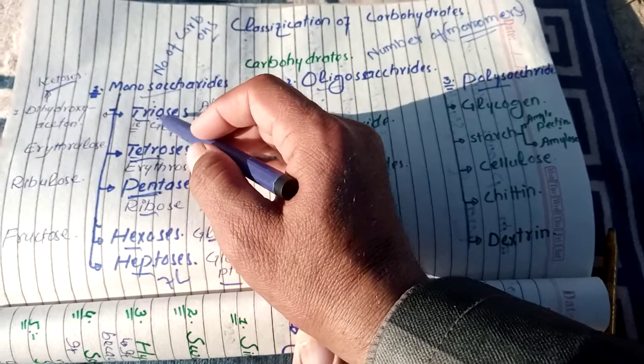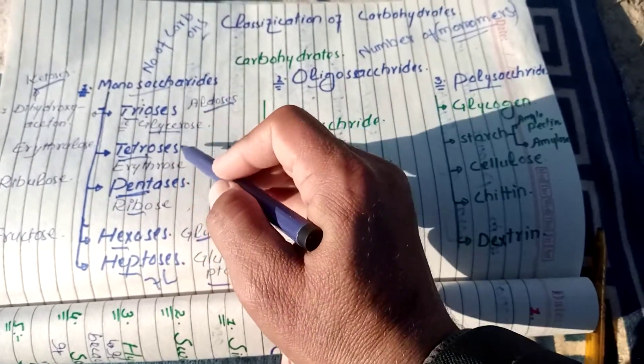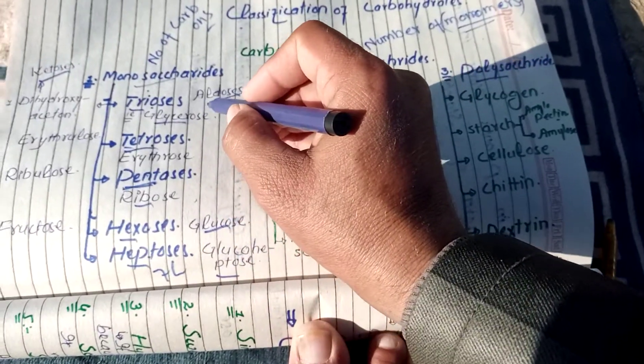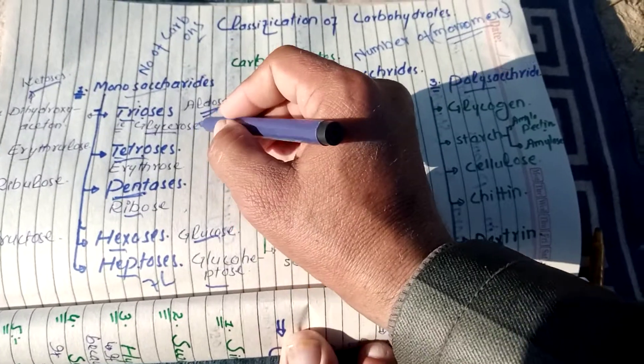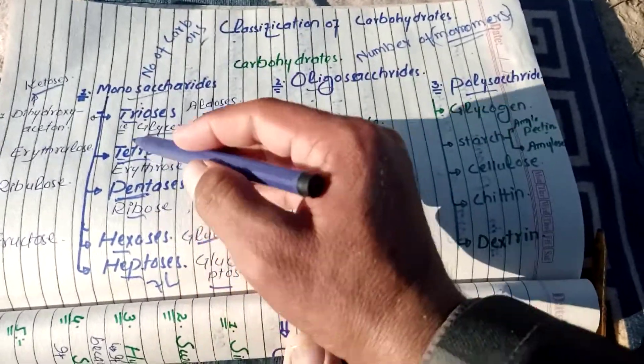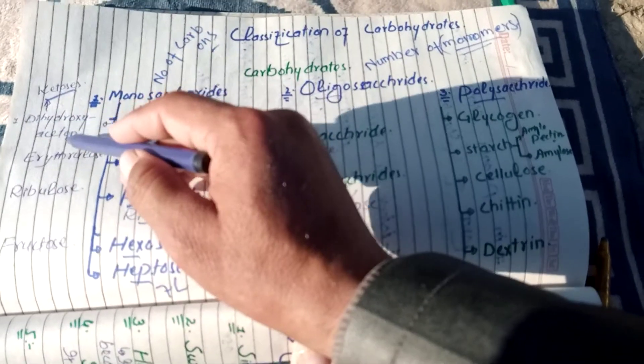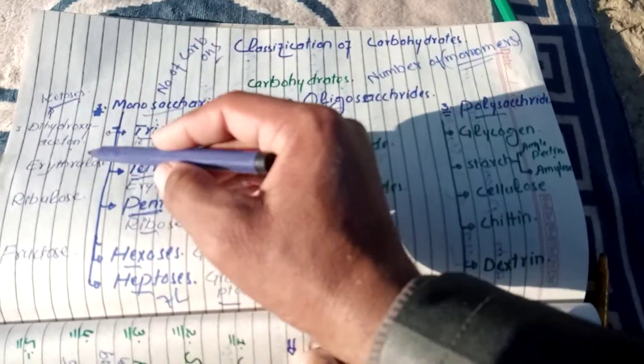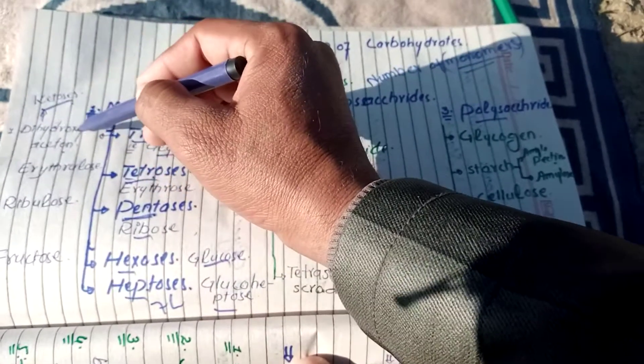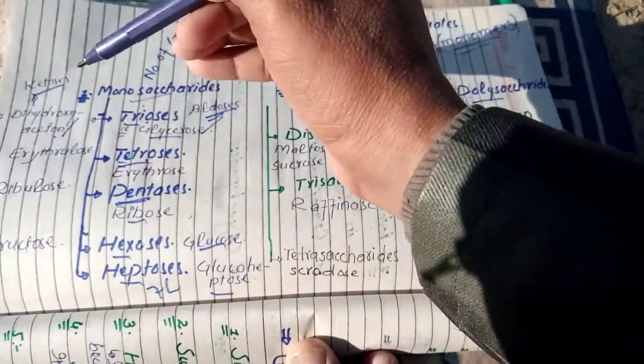Triose jis ka 3 carbon mojood ho. Glyceraldehyde, glyceraldehyde mein aldehyde functional group hai, is wajah se yeh aldose hai. Doosra example, dihydroxy acetone jis mein ketone functional group hai, jis ki wajah se dihydroxy acetone yeh ketose hai.